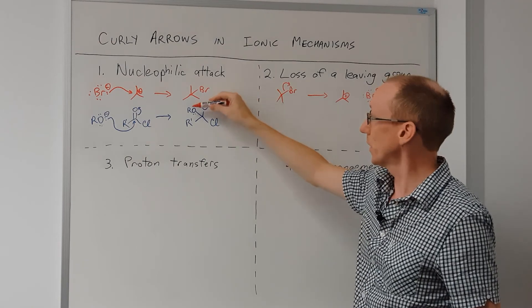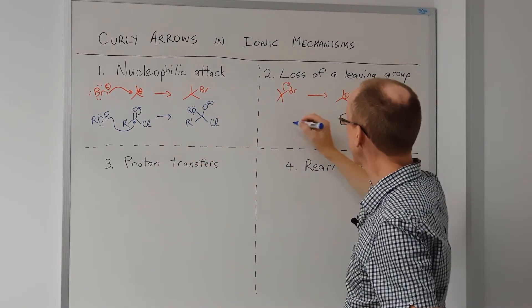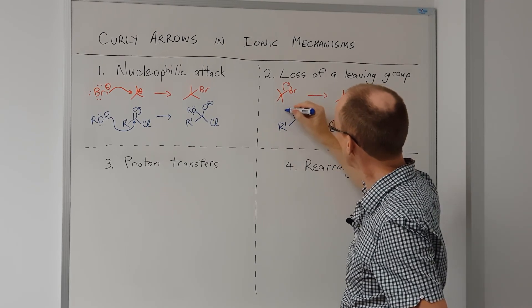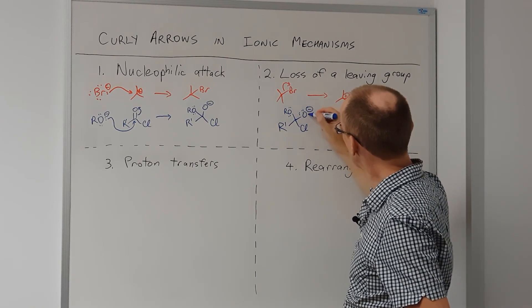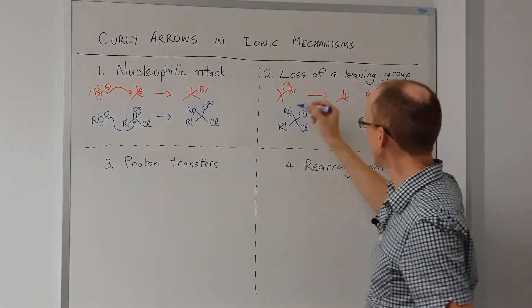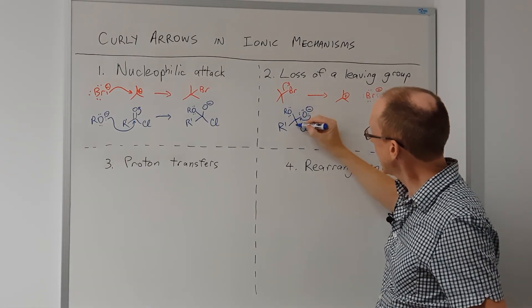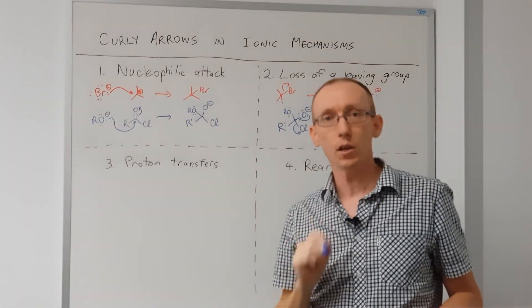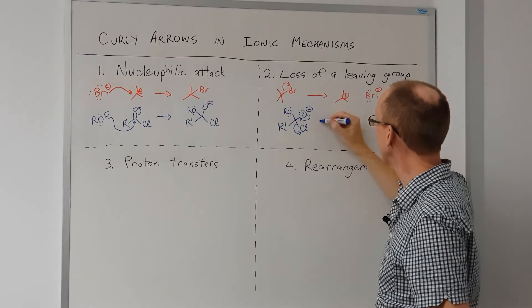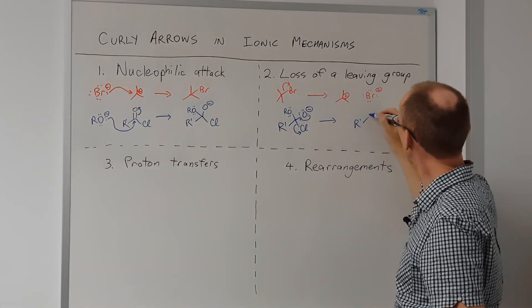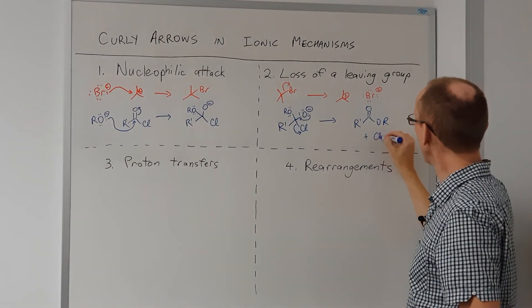We could also lose a leaving group from more complex species, such as the one shown in the nucleophilic attack example. If we take that intermediate and draw it out again, putting in all the Lewis pairs on the oxygen atoms, the lone pair of electrons on this oxygen can help kick out this chloride as a leaving group. So this step is still just loss of a leaving group, but we're going to draw a nice stable resonance structure for the generated carbonyl compound. So we lose chloride and we get this ester, and our leaving group was chloride.